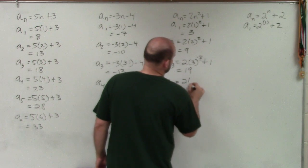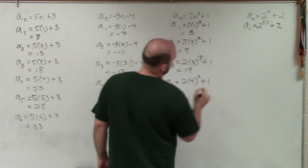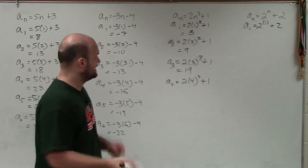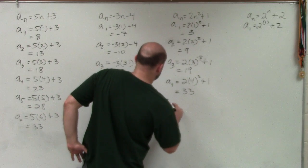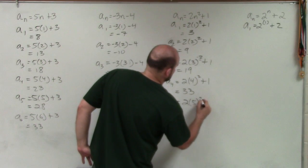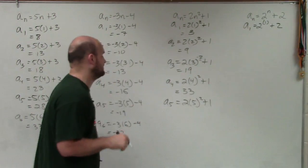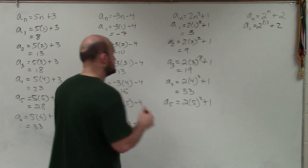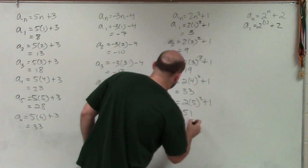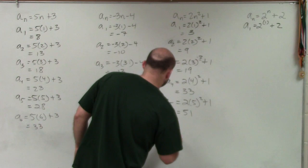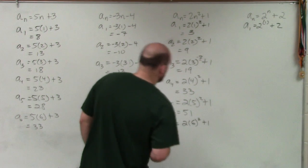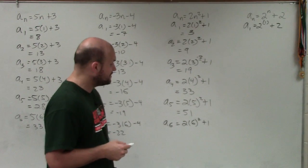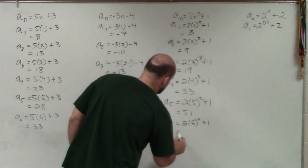A sub 4, 2 times 4 squared plus 1. 4 squared is 16 times 2 is 32 plus 1 is 33. A sub 5 equals 2 times 5 squared plus 1. 5 squared is 25 times 2 is 50 plus 1 is 51. And then the last one, we have a sub 6 equals 2 times 6 squared plus 1. 6 squared is 36 times 2 is 72 plus 1 is 73.